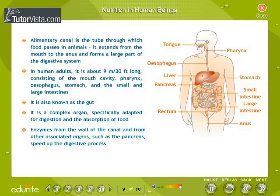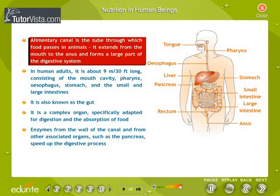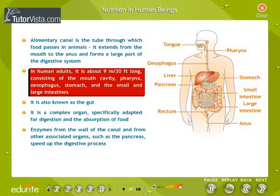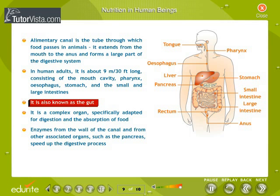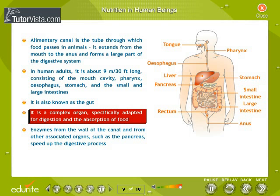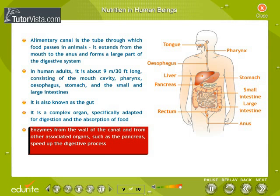The alimentary canal is the tube through which food passes in animals. It extends from the mouth to the anus and forms a large part of the digestive system. In human adults, it is about 9 meters or 30 feet long, consisting of the mouth cavity, pharynx, esophagus, stomach, and the small and large intestines. Also known as the gut, it is a complex organ adapted for digestion and absorption of food. Enzymes from the wall of the canal and from associated organs such as the pancreas speed up the digestive process.